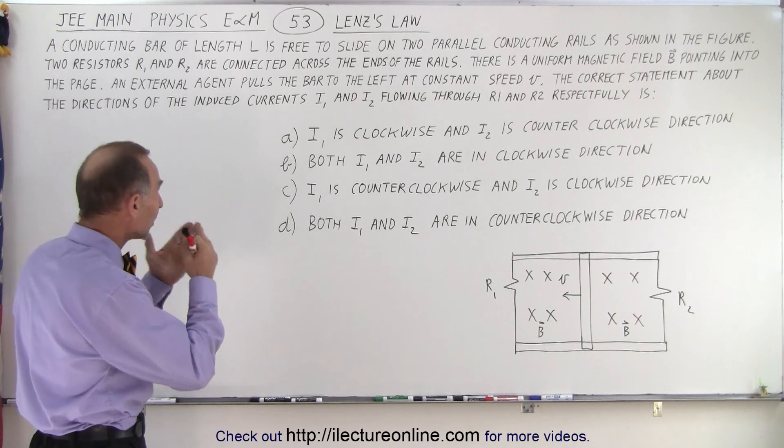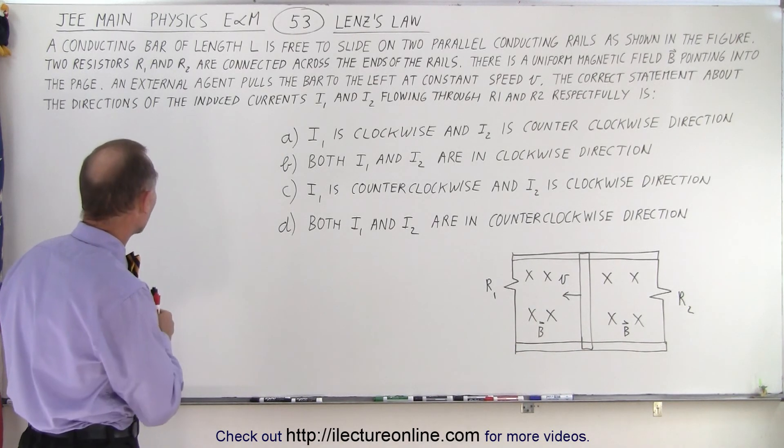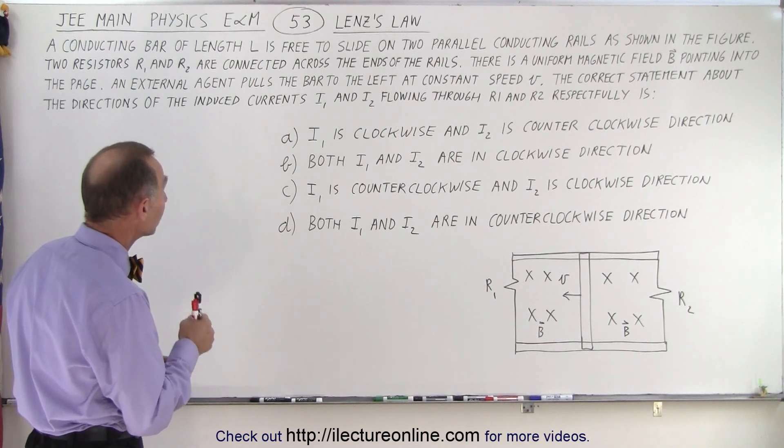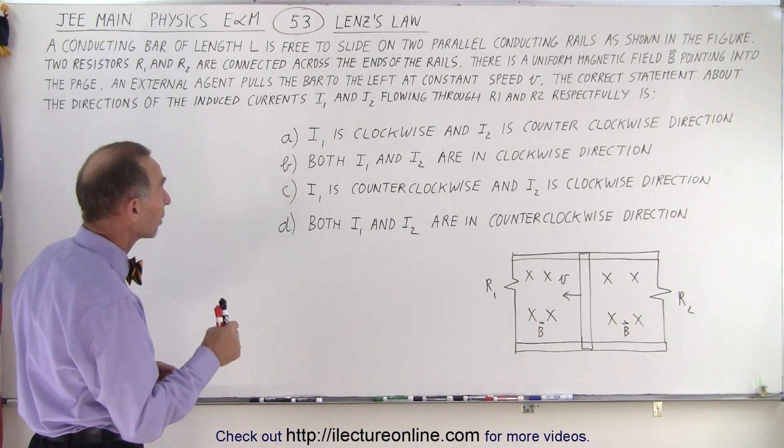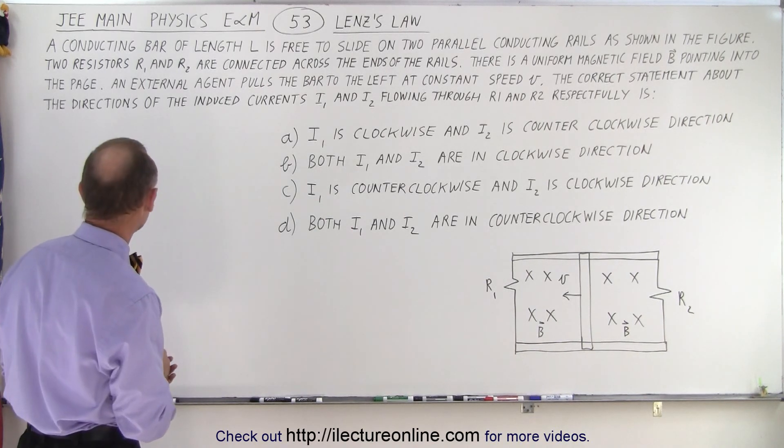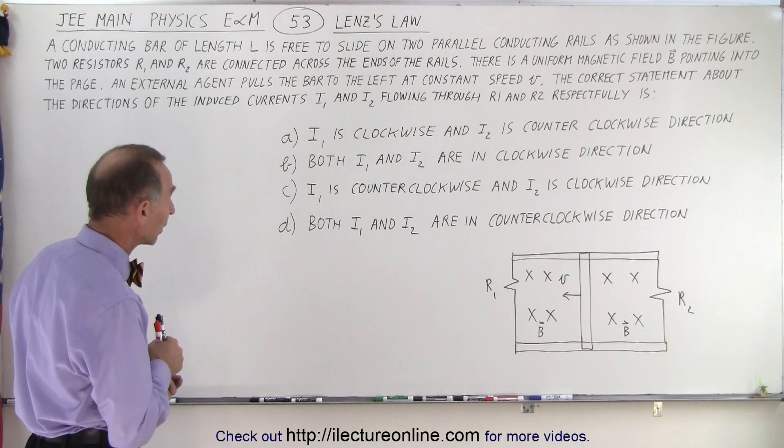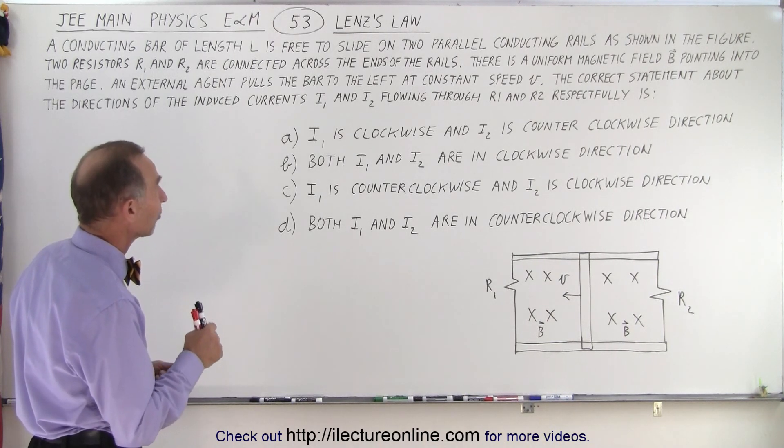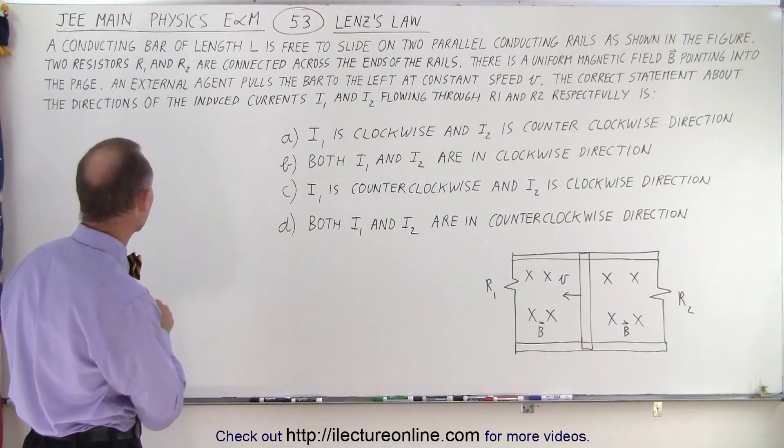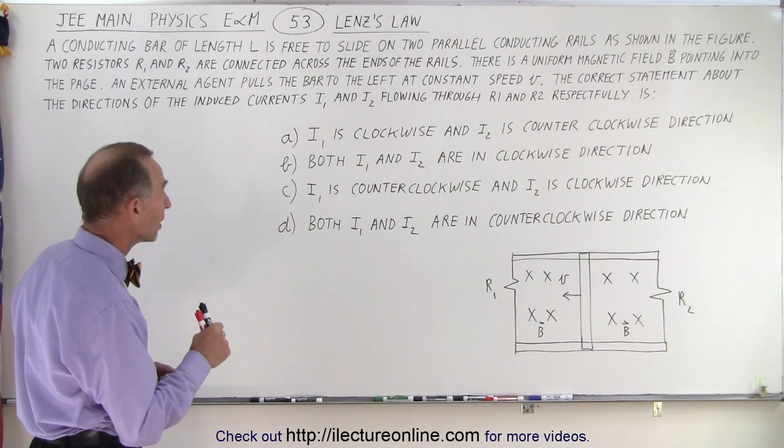It does deal with the concept of Lenz's Law and it says that a conducting bar of length L is free to slide on two parallel conducting rails as shown in the figure. They do provide the figure. Two resistors R1 and R2 are connected across the ends of the rails. There is a uniform magnetic field B pointing into the page. An external agent pulls the bar to the left at constant speed V.